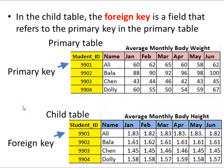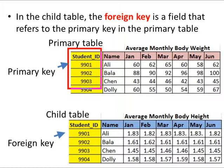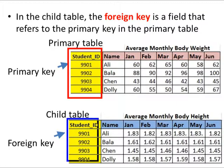In the child table, the foreign key is a field that refers to the primary key in the primary table. In this case, we have the primary table shown over here, with the average monthly body weight as well as the average monthly body height for the child table. The primary key in the primary table is the student ID, and in the child table, this primary key will be known as the foreign key.